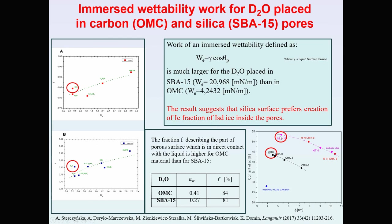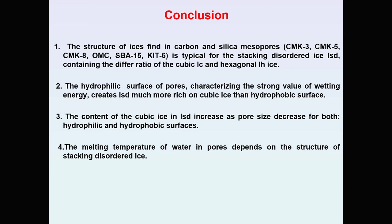As we can see, the content of cubic ice is larger in SBA15 than in OMC. In conclusion, the structure of ice found in carbon and silica mesopores is typical for stacking-disordered ice containing different ratios of cubic and hexagonal ice. The hydrophilic surface of the pore, characterized by strong wetting energy, creates disordered ice much richer in cubic ice than hydrophobic surfaces. The content of cubic ice increases as pore size decreases for both hydrophilic and hydrophobic surfaces. The melting temperature of water in pores depends on the structure of stacking-disordered ice, which differs in the content of cubic ice.